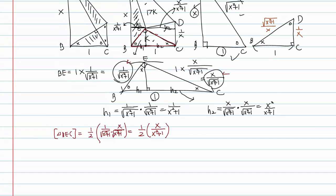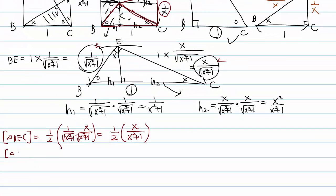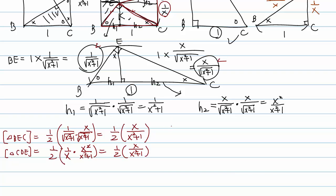For triangle CDE: one half times base 1 over X times height X squared over X squared plus 1. The X cancels, giving area equals 1 over 2 times X over X squared plus 1.